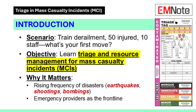Picture this: a train derails in your city. 50 people are injured — broken bones, bleeding, some not breathing — and you've got 10 staff and one ambulance on scene. What's your first move? If that sounds overwhelming, you're not alone. Mass casualty incidents push us to our limits, but with the right tools, we can save more lives.